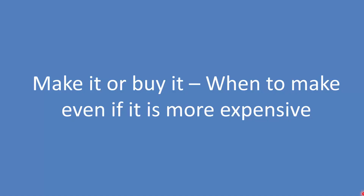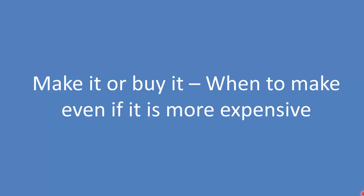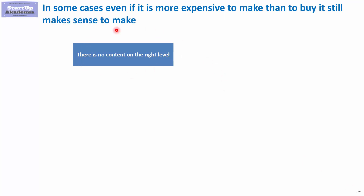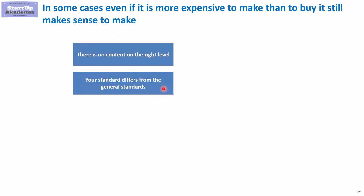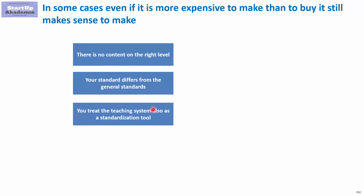In some cases, the make option — despite being more expensive — is still the right choice. The first reason is when there is no content available at the right level. Another reason is when your standards differ from general standards and you want to use the teaching system as a standardization tool — for example, in financial modeling, where a specific external instructor may present data differently than your team requires, so you build your own course to teach your own standards.